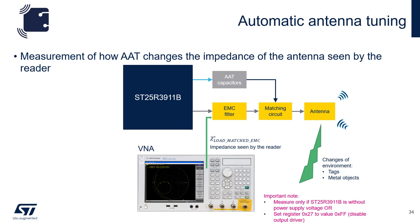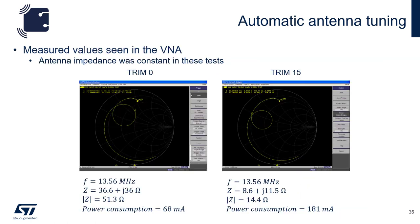To see how automatic antenna tuning changes the impedance of the antenna as seen by the reader, you simply connect your VNA to the output pins of the 3911B. Please note that prior to hooking up your VNA, set register 27 of the 3911B to FF. If this step is not done, you will damage your VNA. After connecting up our VNA, we can measure the change as a result of automatic antenna tuning. At trim zero, our 13.56 MHz is matched at 36.6 ohms. When we change the trim to 15, our impedance changes to 8.6 ohms, and our power consumption has increased as well.